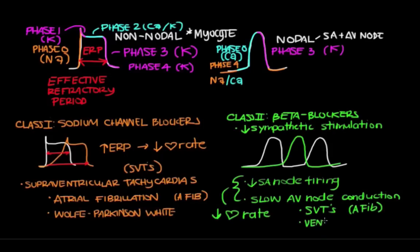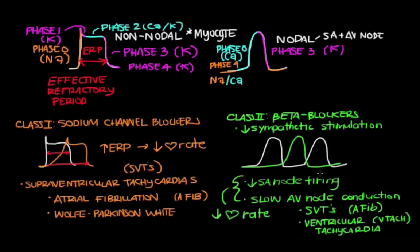Beta blockers can also be used for ventricular tachycardias, also known as VTAC. Someone with a history of an SVT or VTAC might be put on a beta blocker to help control their heart rate.